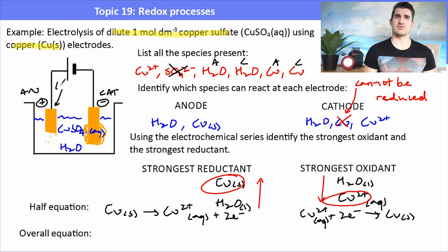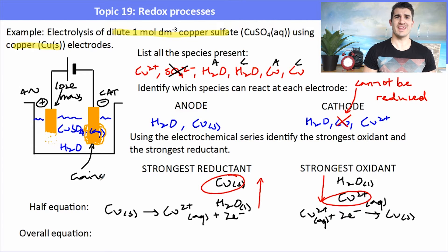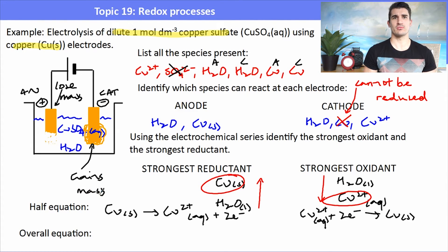In a data analysis context, the anode would lose mass and the cathode would gain mass, and any impurities would fall to the bottom of the beaker.